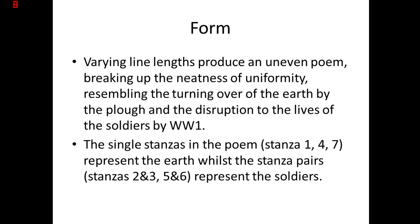The single stanzas in the poem — stanzas one, four, and seven — are the ones that stand alone with their full stops. These are where the poet Owen Shears is describing the earth, so these represent the earth. And the pairs of stanzas — stanzas two and three, and stanzas five and six — these represent the soldiers.